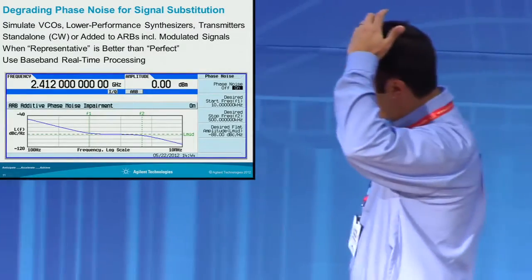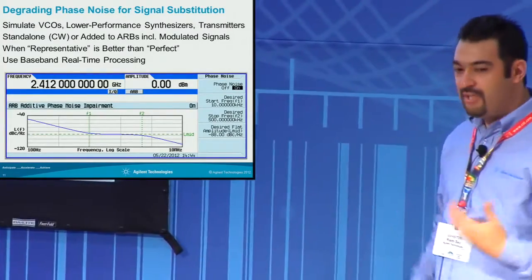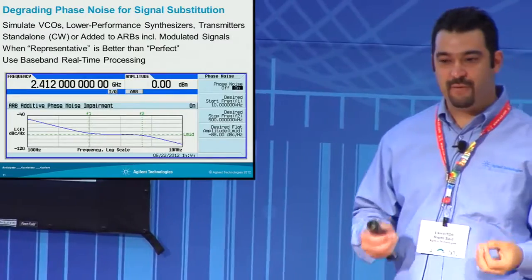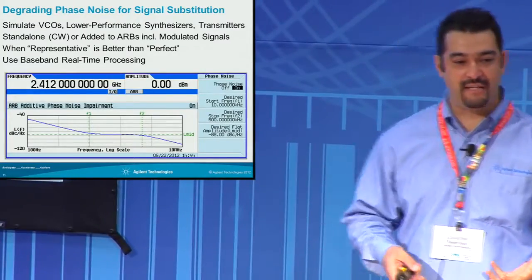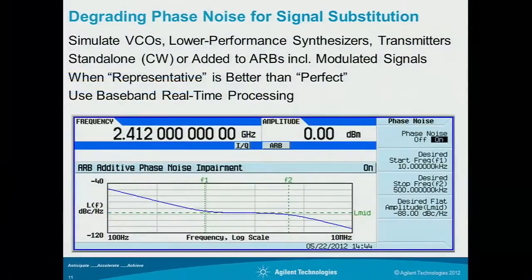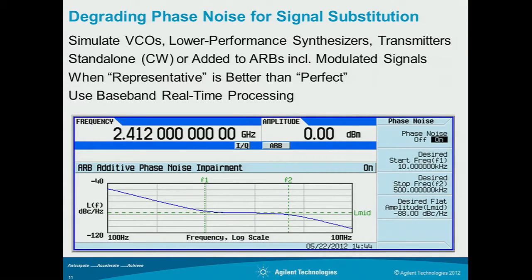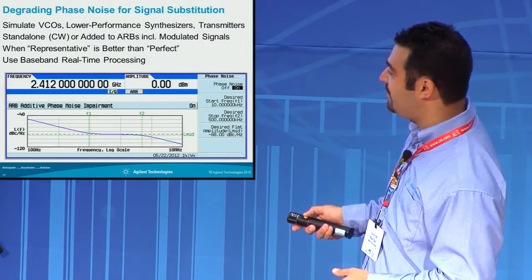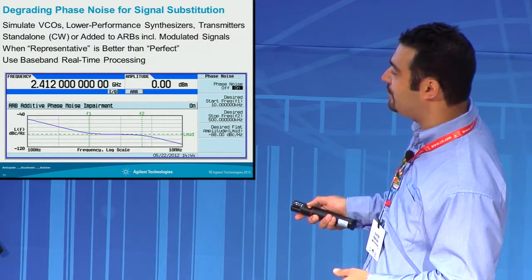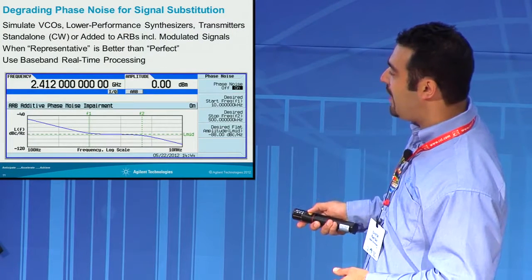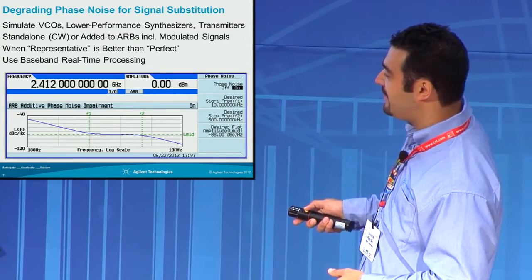One of the things we have as a tool — if you don't have a good feel for how phase noise impacts your design — we have a technique in some of our signal generators to actually inject phase noise. What we do is digitally add a 20 dB per decade slope to both the close-in phase noise and broadband phase noise. You define F1 and F2 and you can specify what phase noise level you want.